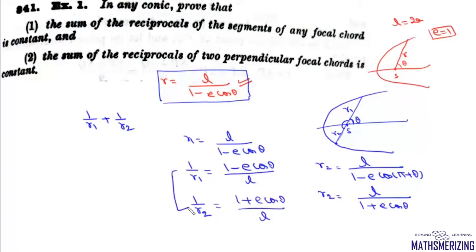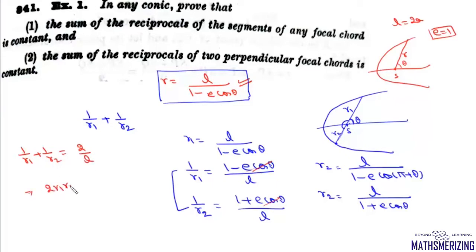Now we add these two equations: 1/R1 + 1/R2. The E·cosθ terms cancel and we get 2/L. This can also be written as 2R1R2/(R1 + R2) = L, which is the semi-latus rectum.